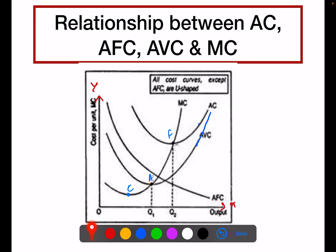Now we introduce the MC curve. The MC curve is also U-shaped. Why? Because of the law of variable proportions. MC is a U-shaped curve which cuts or intersects both AC and AVC at their minimum points. So point A is the minimum point of AVC and point F is the minimum point of AC. MC intersects both curves at these minimum points.